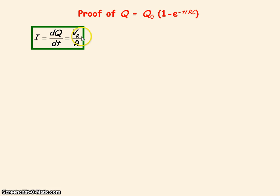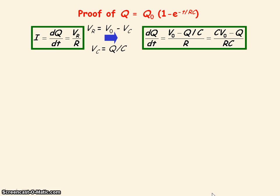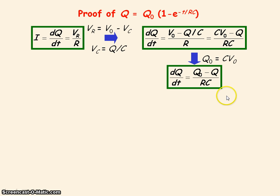We also know that the voltage across the capacitor is equal to the charge stored on the capacitor divided by its capacitance. So if we substitute for V_R and then V_C, we get this equation. When the capacitor is fully charged, the charge stored Q₀ will equal C·V₀, and so the equation becomes this.